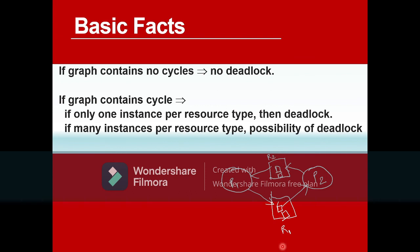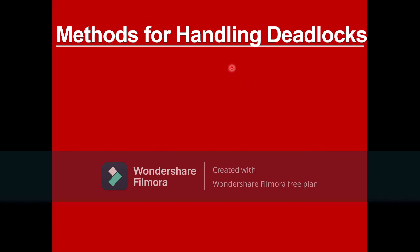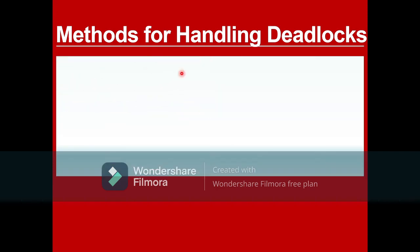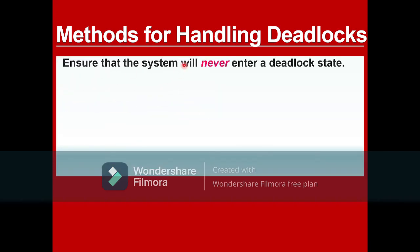R2 has two instances and R1 also has two instances. So if there are many instances per resource type, there is only a possibility of deadlock — not a certainty. Now, what are the methods for handling deadlock? The first method is to ensure that the system will never enter a deadlock state — you make sure deadlock will never occur in the first place.